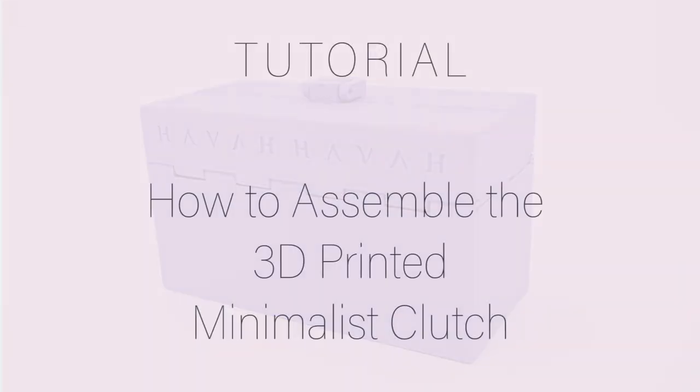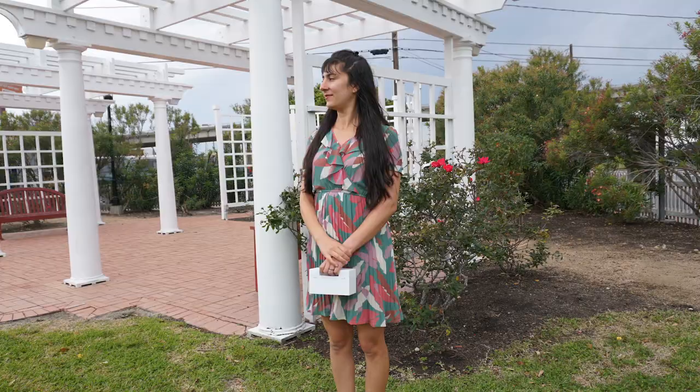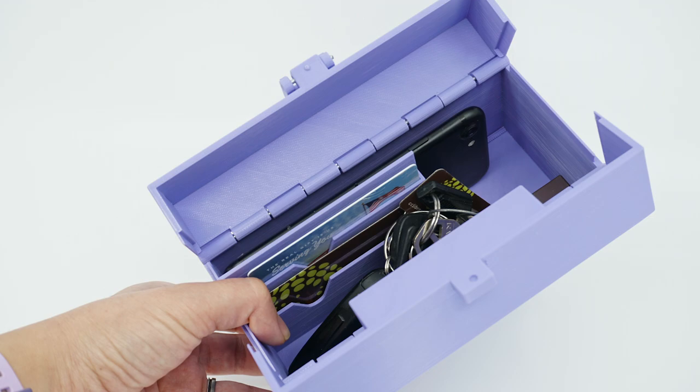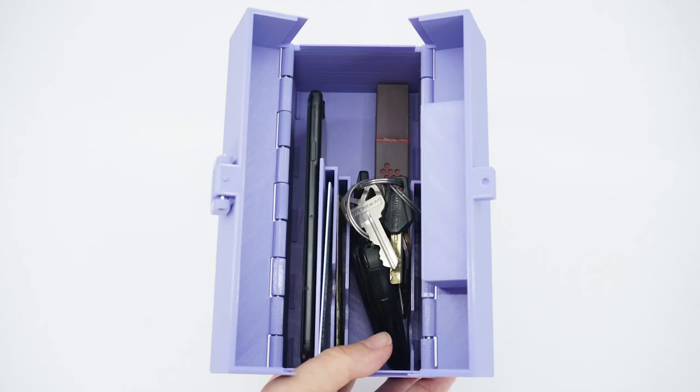This is a tutorial on how to assemble the 3D printed minimalist clutch. When you open this small purse you will see that there is a divider that neatly separates your phone, cards, and keys.